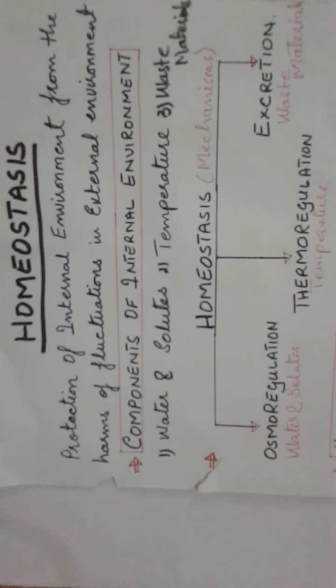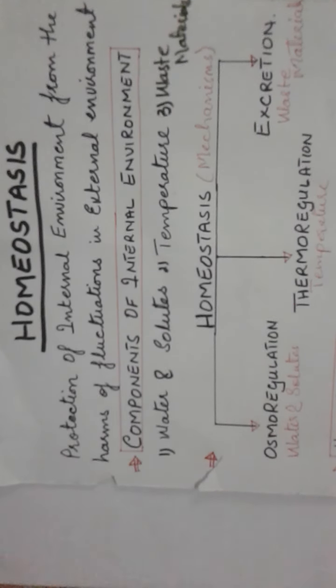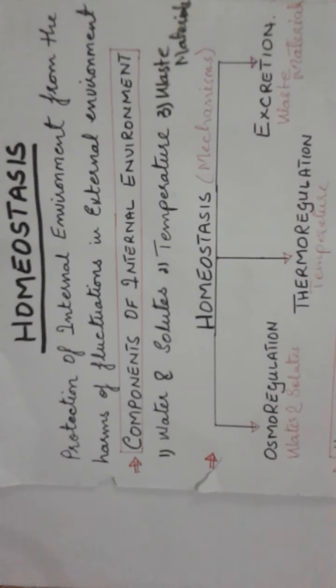Now we will discuss the components of the internal environment that are affected by the external environment. First is water and solutes - their concentration is specific for each organism's body. Second is temperature - human body temperature is 37 degrees Celsius. If temperature increases you have fever; if it goes too low, you're in trouble.